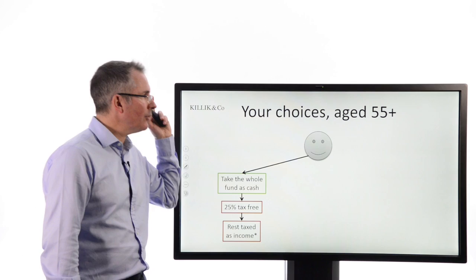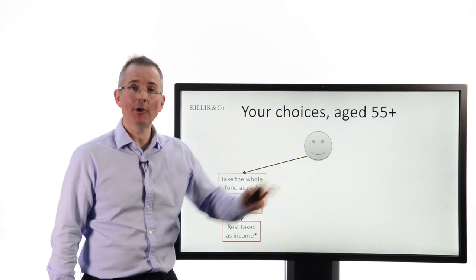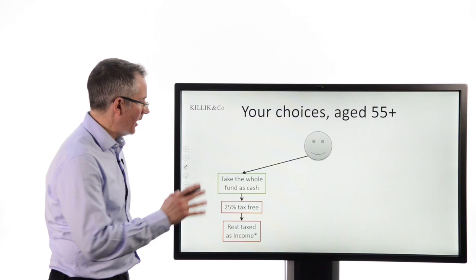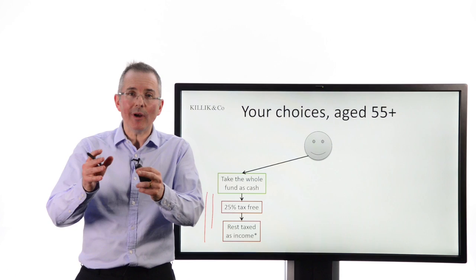In summary, the choices you now have, which you didn't have before, age 55 plus. That age could move in the future, but it's 55 plus at the moment, are take out the whole of your pension as cash. And here's the first warning. You know, don't forget, you only get,